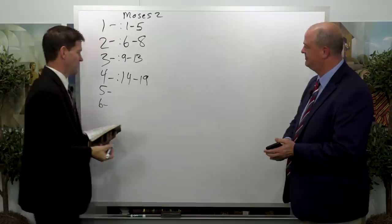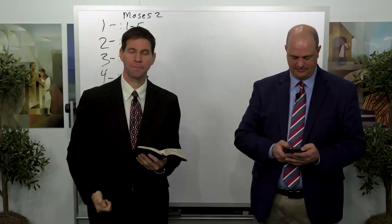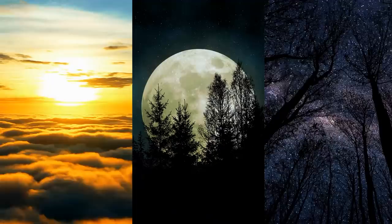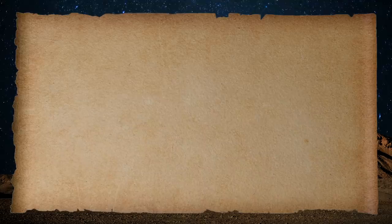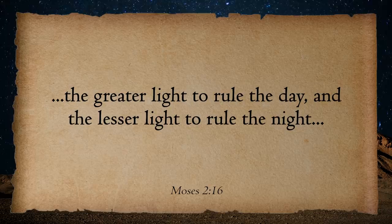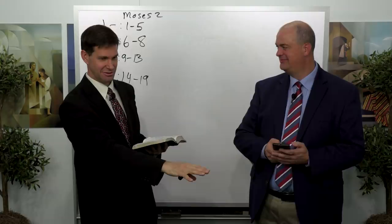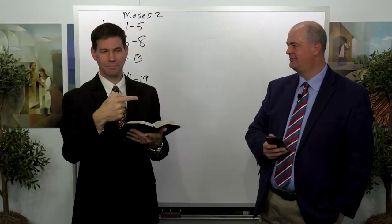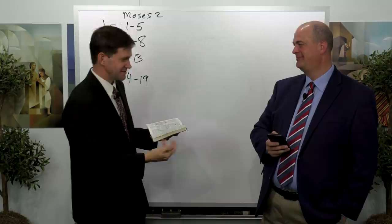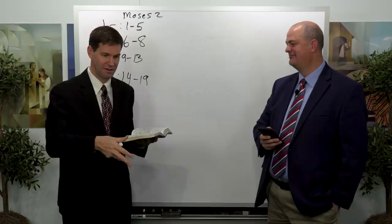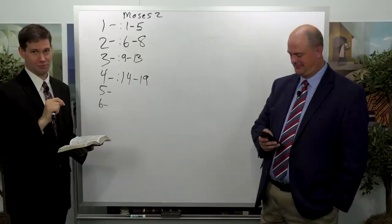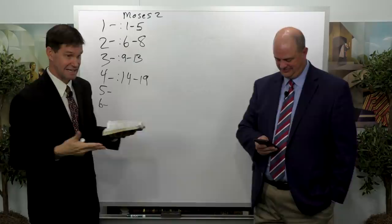Day four, according to all three scriptural accounts — Genesis, Moses, and Abraham — talks about God creating the sun, the moon, and the stars. The greater light, the sun, would rule the day; the lesser light, the moon, would rule the night. It's fascinating that in those three scriptural accounts, the plant kingdom is created in day three, and then the celestial bodies giving light to the earth in day four. In a post-scientific world where we understand microbiology and photosynthesis, you can see why it might make more sense to have the sun created before those plants.